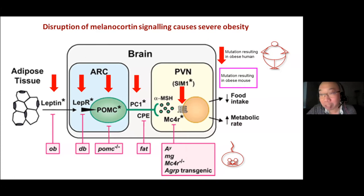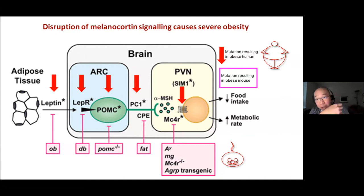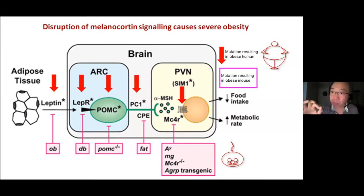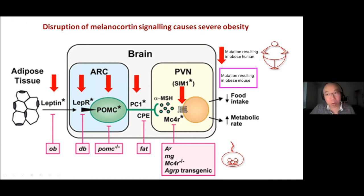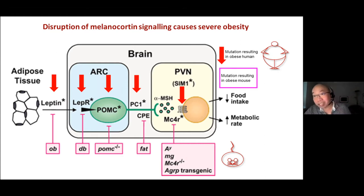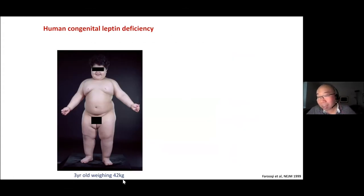Let's start at the very beginning and deal with leptin deficiency — what happens if you don't have leptin. This is a child without any leptin: a three-year-old weighing 42 kilograms. This is not Coca-Cola obesity, and it's not too much PlayStation obesity. This child lacks leptin. The implication is that the brain has no way of sensing how much fat this child has. From an evolutionary perspective, when don't you have fat? When you're starving. So despite this child's body habitus, he has a brain that thinks he is starving. As a result, it makes him eat a lot, with hyperphagic behaviour — hyper for more, phagic for eat.